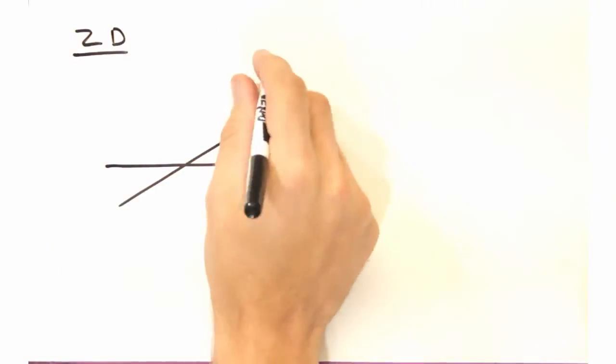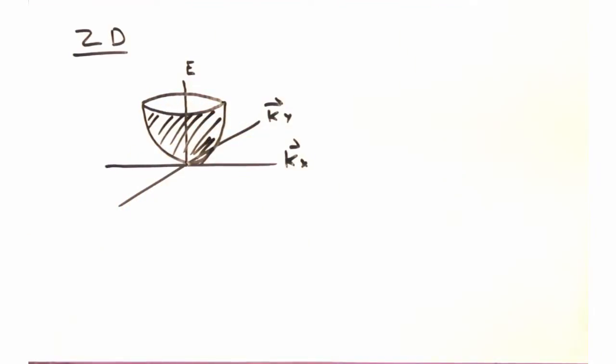Now in 2D, the original parabola looks like this, since it extends out into Kx and Ky.